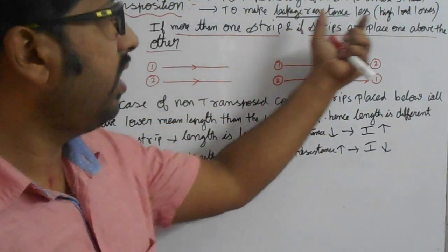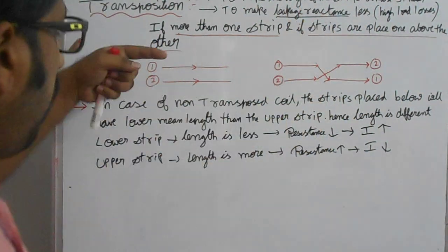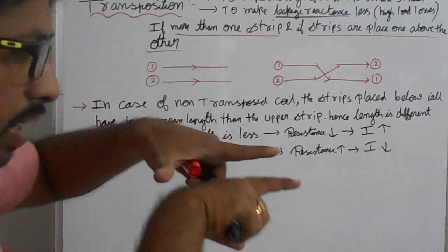In order to avoid these losses, we have to do transposition like one above the other layers, one above the other.